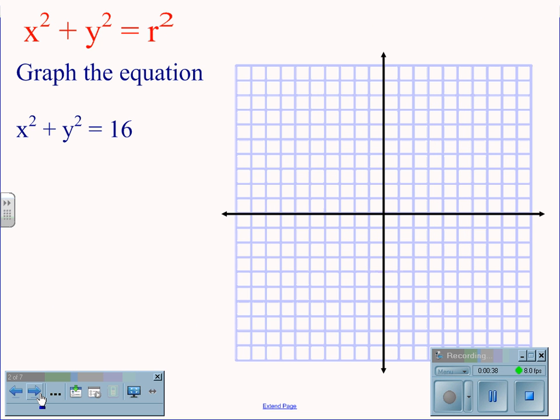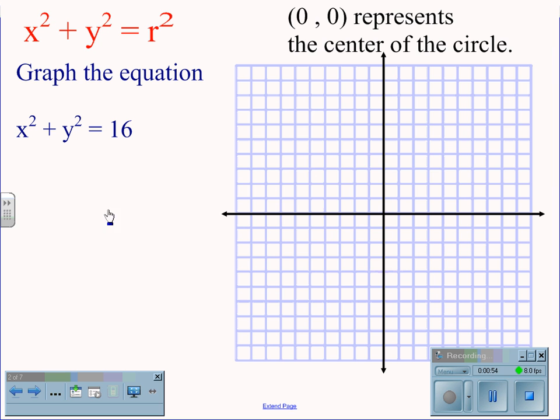For the equation x squared plus y squared equals r squared, we will graph the equation x squared plus y squared equals 16. Realizing that there are no h and k for this equation, nothing added to x or y, we know that 0, 0 will represent the center of the circle.